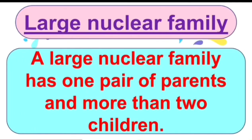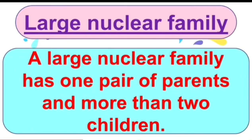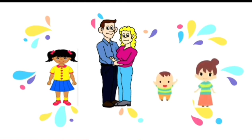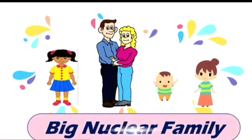Large nuclear family. A large nuclear family has one pair of parents and more than two children. Sona has parents, one younger brother and one younger sister, so Sona is having a large nuclear family.